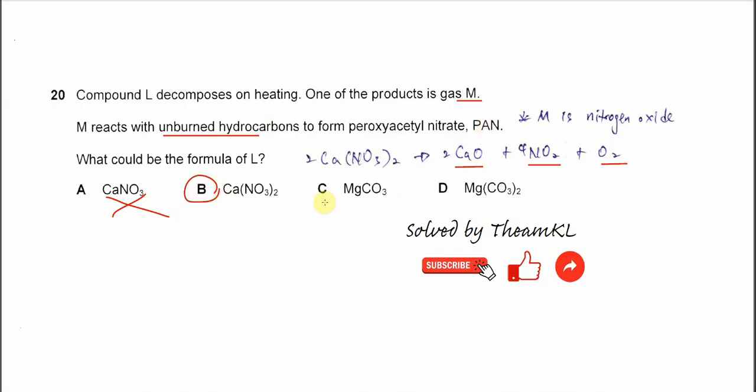It cannot be C and D because they are both carbonates. So it will just form CO2. CO2 will not form this peroxyacetyl nitrate with the unburnt hydrocarbon. So the answer is B.